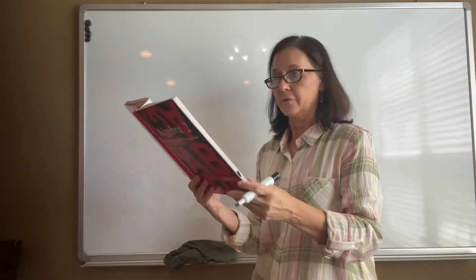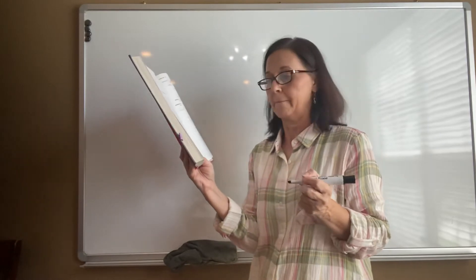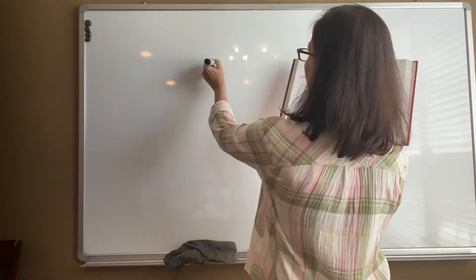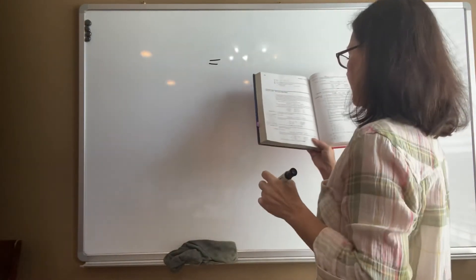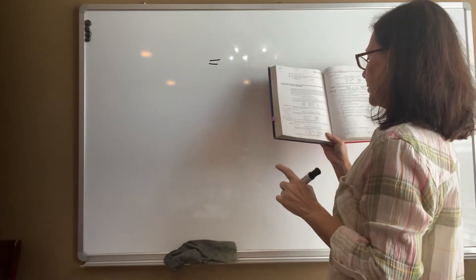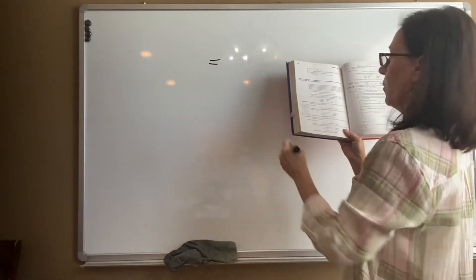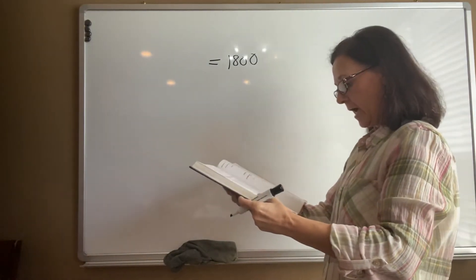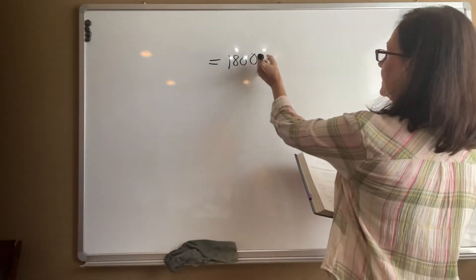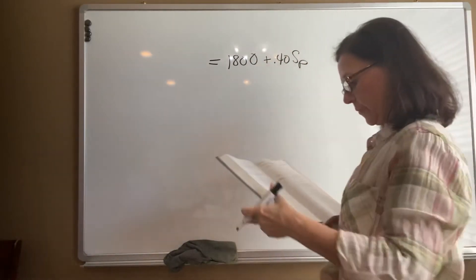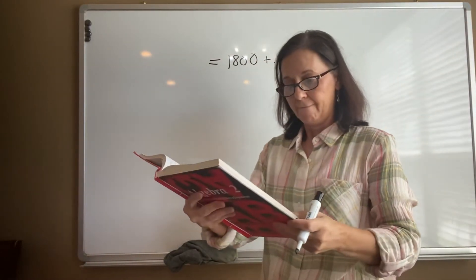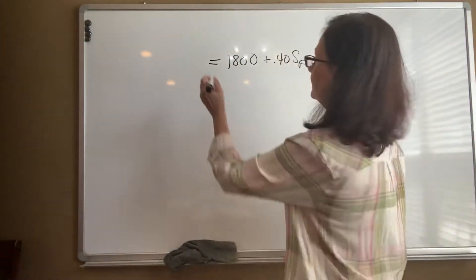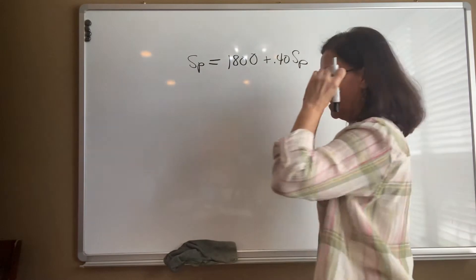Let's look at example two on the bottom of page 420. Now they're starting out by giving us the purchase price. The purchase price of the item was $1,800. If the markup was 40%, so 0.40 of the sales price, what was the selling price?